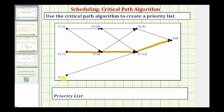Starting at task three, the only way to get to the end would be task three to task seven to the end, which only takes 16 hours. So this is our critical path, and the critical time would be 25 hours. For the next step, we take the first task in this path, which is task two, and it's going to be first in the priority list. Now we remove task two from the digraph and repeat the process.